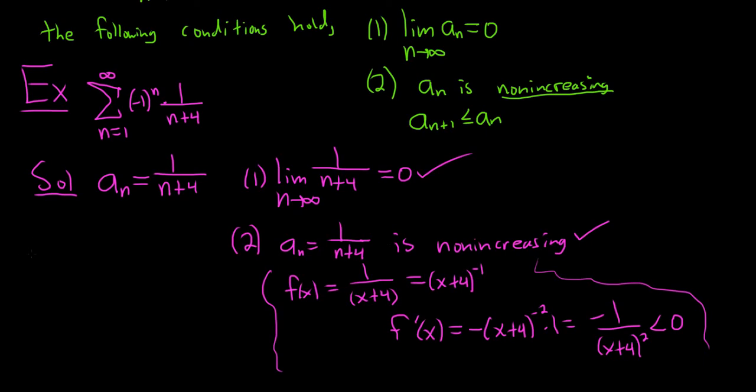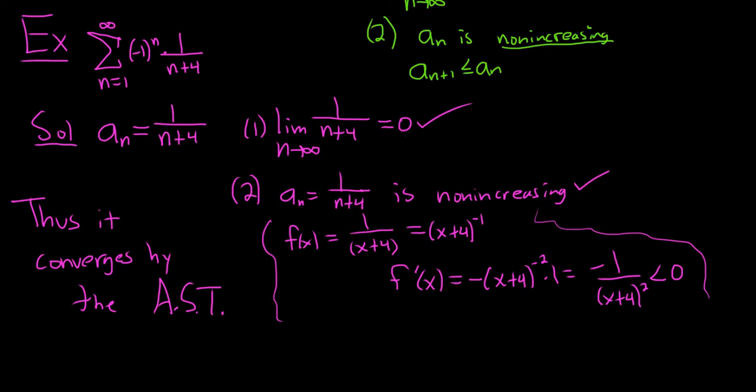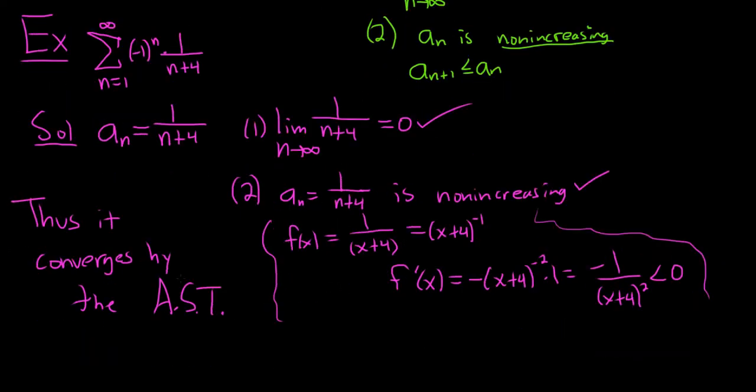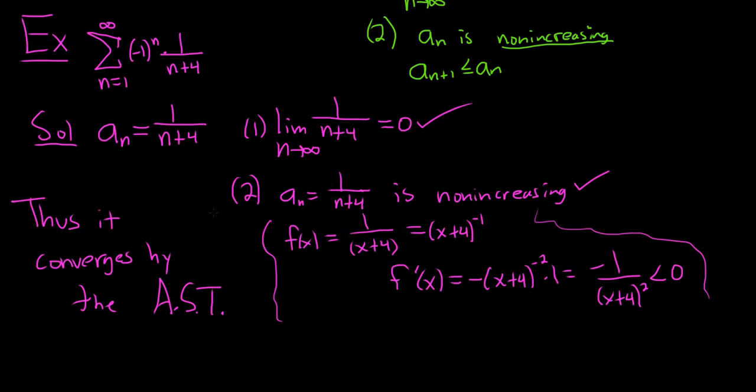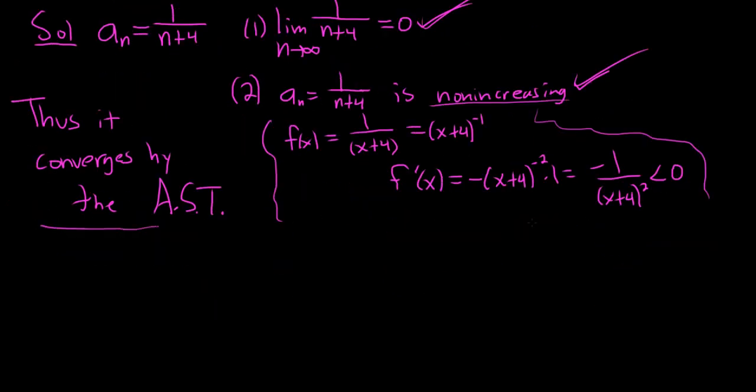So both conditions are satisfied. Then you just say something like, thus it converges by the AST. Let's abbreviate it. Alternating series test. I don't think I abbreviated it above. Let's call it the AST. Converges by the AST or AST. It's really AST because it's an acronym for alternating series test. Basically, you set a sub n to be your non-alternating part. Take the limit. There it is. Say it's non-increasing. There it is. Both of these are satisfied. You got it.